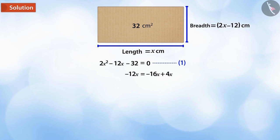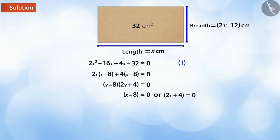On solving, we see that x minus 8 is equal to 0 or 2x plus 4 is equal to 0. Hence, we get x is equal to 8 or x is equal to minus 2.